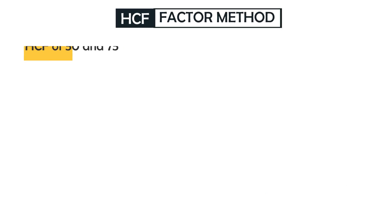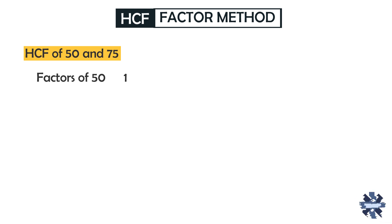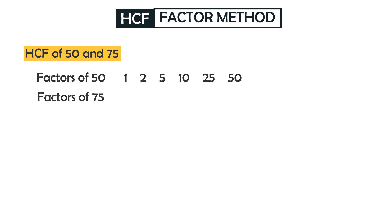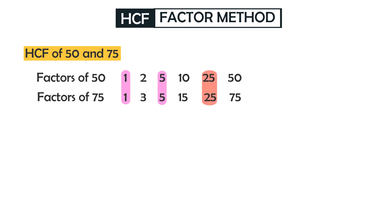Now let's find the HCF of 50 and 75. The factors of 50 are 1, 2, 5, 10, 25, and 50. The factors of 75 are 1, 3, 5, 15, 25, and 75. The common factors of 50 and 75 are 1, 5, and 25. Among them, 25 is the highest. So the highest common factor of 50 and 75 is 25.